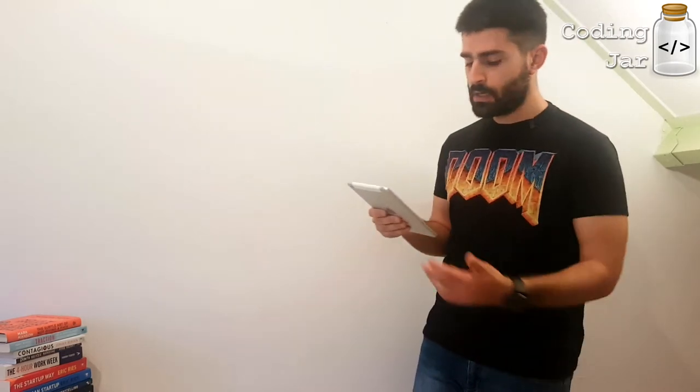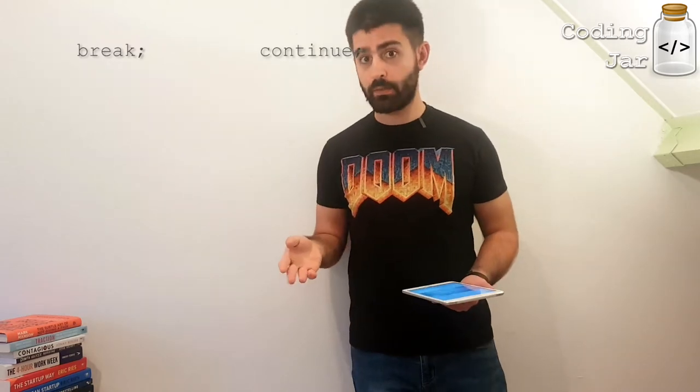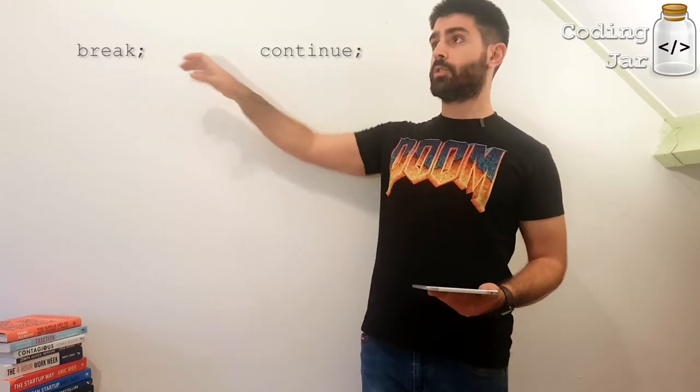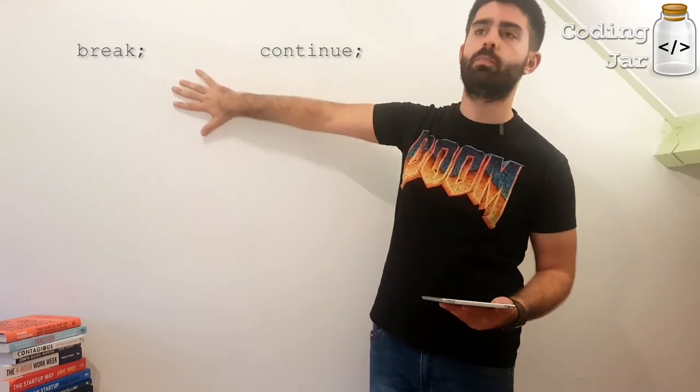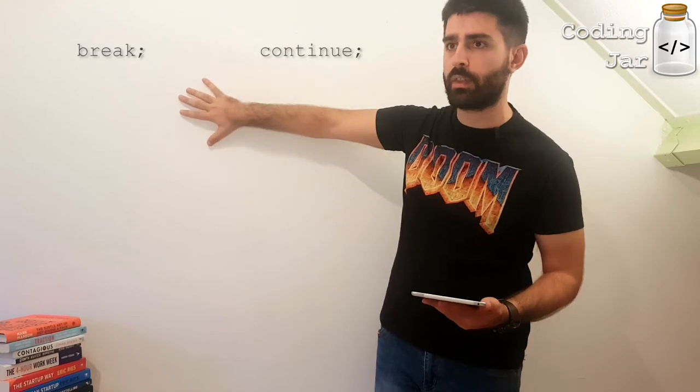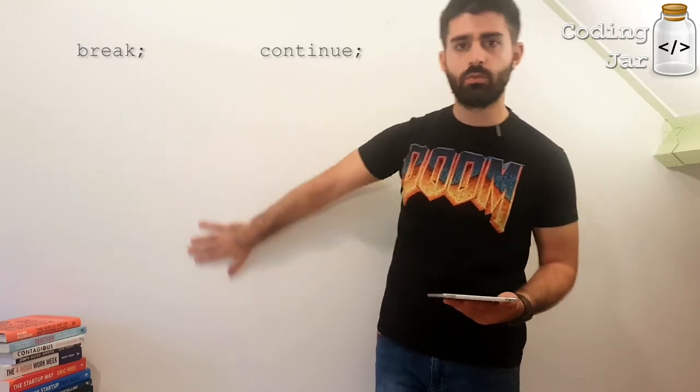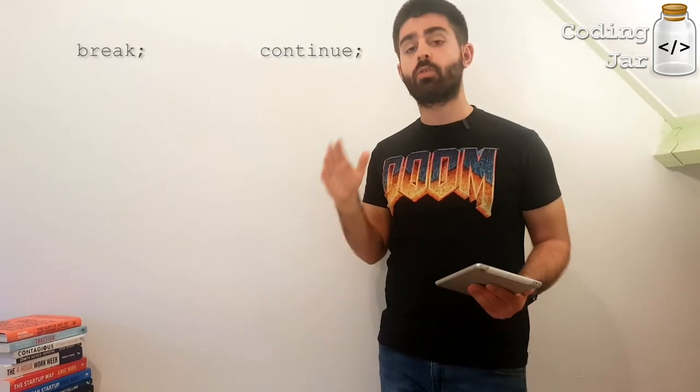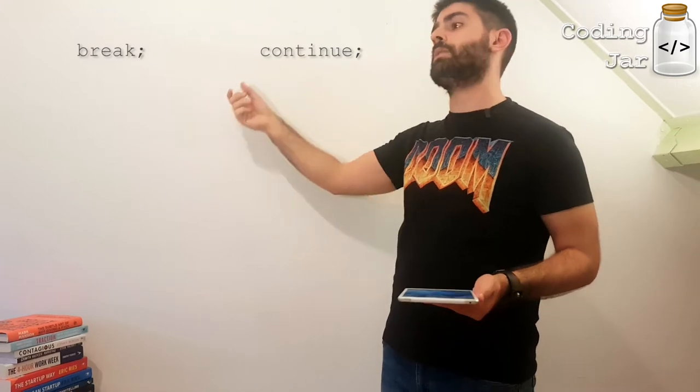Okay, so we have talked about flow control. But what about flow control control? Sometimes you want to control your flow control. There are two very useful statements, break and continue. We have already seen break, which is stop executing the block of code you're currently inside. The statement, the loop, the switch, the if, whatever. Stop executing that and continue your program below that block of code and onwards.